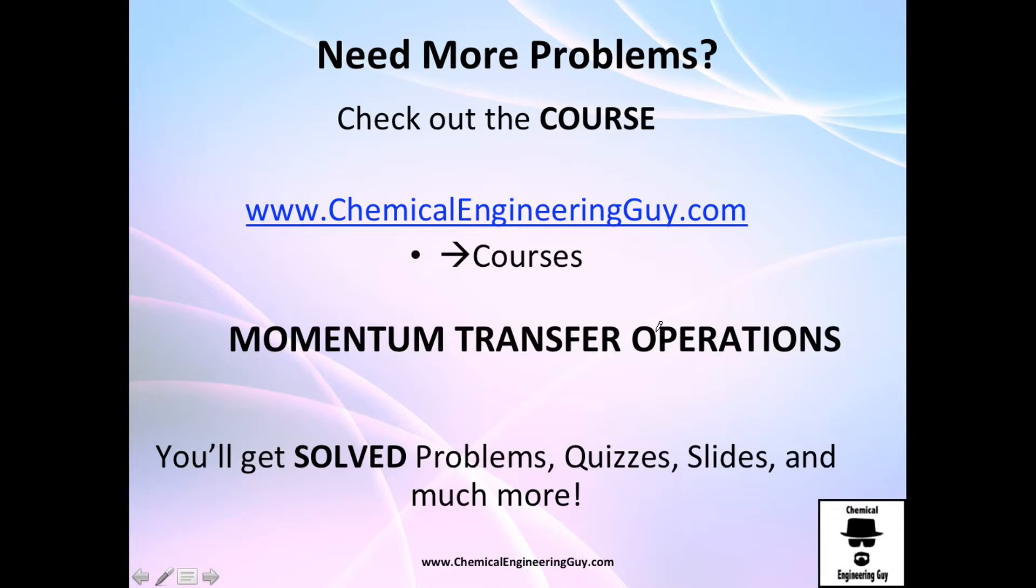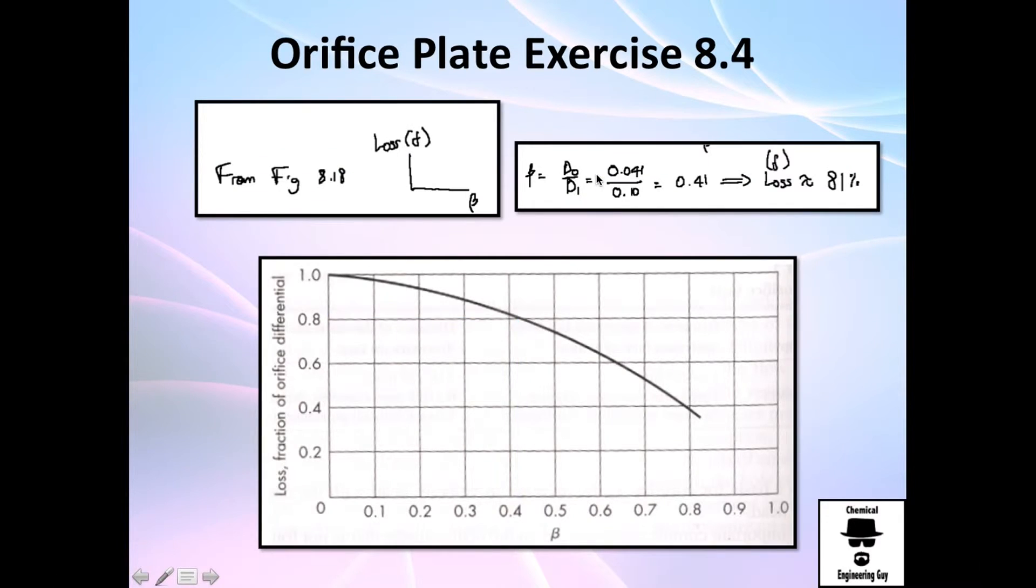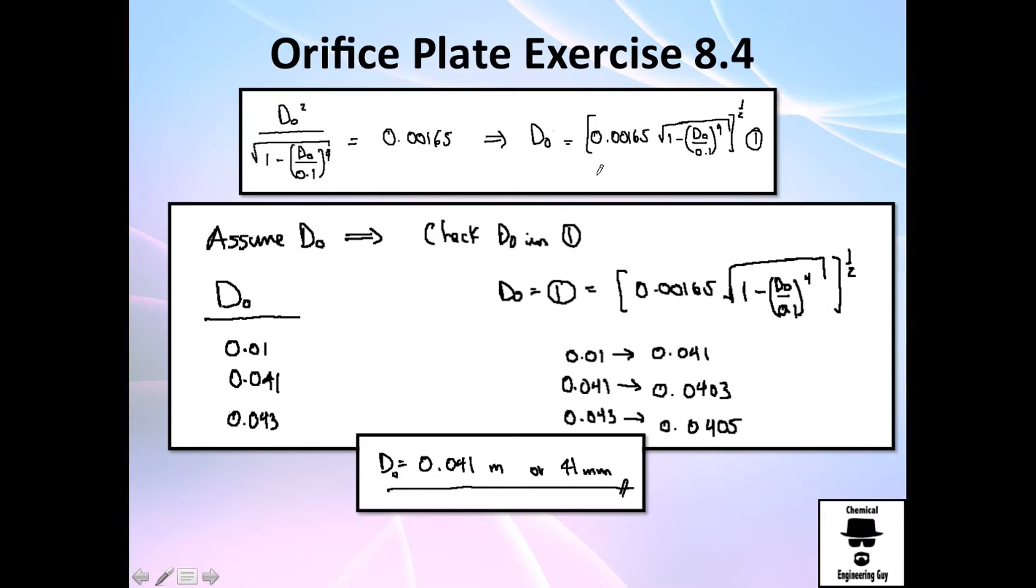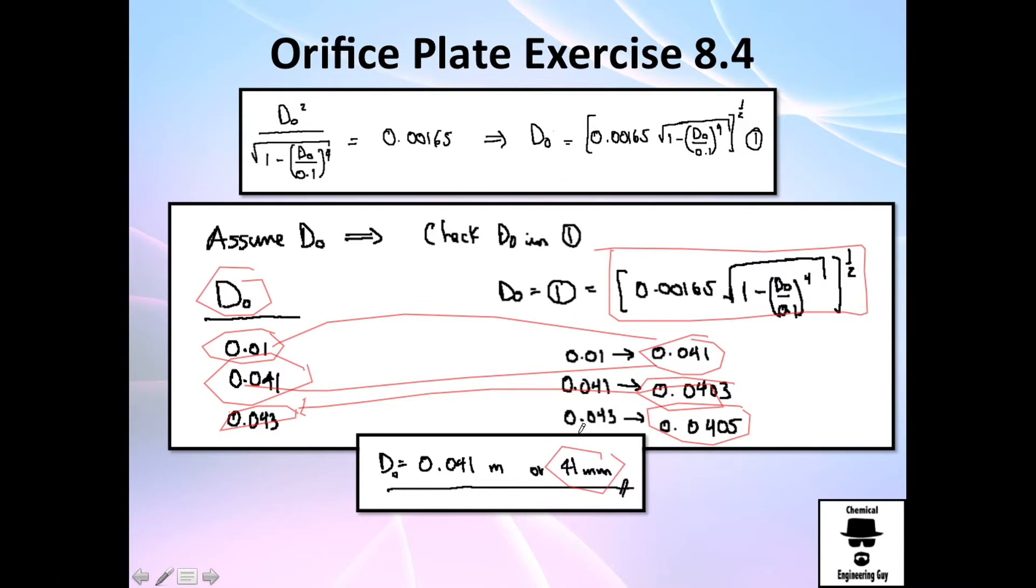So this one, if you checked out the venturi tube before, this one is a little bit more tricky because we don't have diameter of the orifice. And because everything is based on the diameter of the orifice or the throat, we got problems. We had to make this equation right here and propose many diameters and wait until we converge into a value. In this case, it was pretty easy. 0.01 goes directly to 0.041, I tried 0.041 again and I see that it won't change, so that's why I choose 0.01 and 41mm.